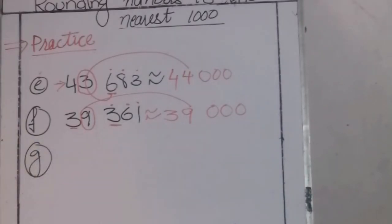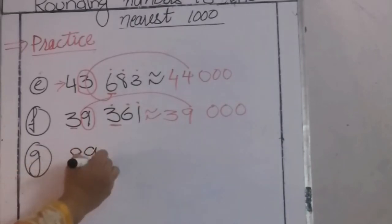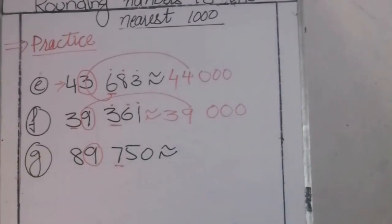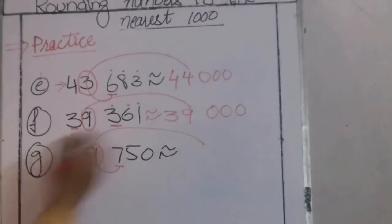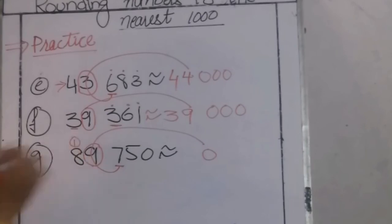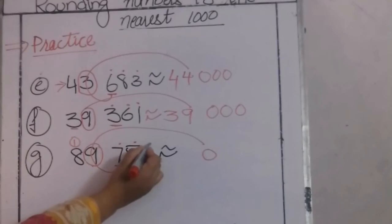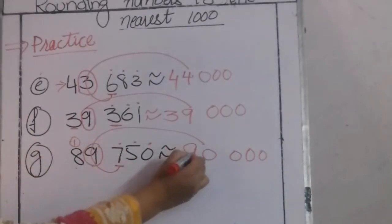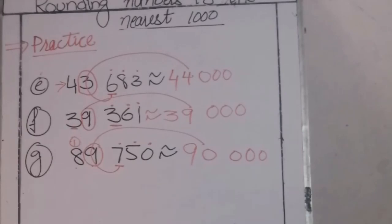Part G: 89,750. There are two steps for solving the question. First, circle the digit at the 1000 place and underline the digit at the 100 place. The underlined digit is a strong number, so it pushes up my 9 and 9 becomes 10. We write 0 here and carry 1 to 8. All digits after the circled digit become 0, and the 8 becomes 9. So 89,750 becomes 90,000.